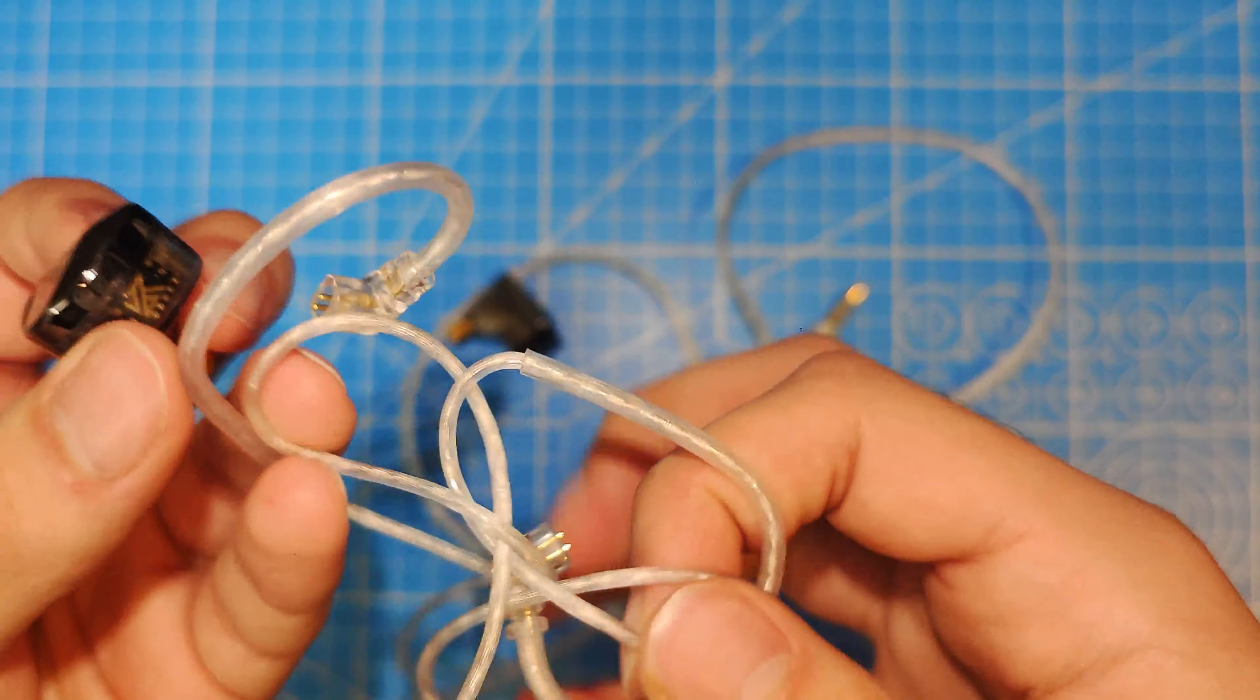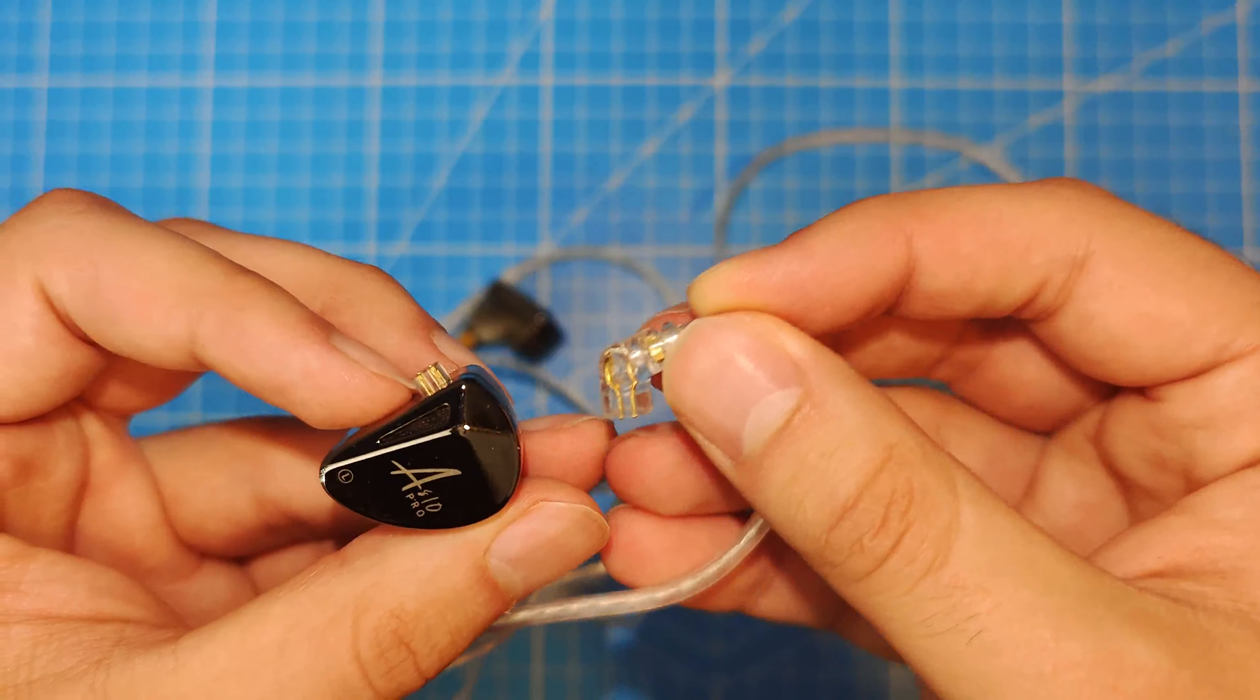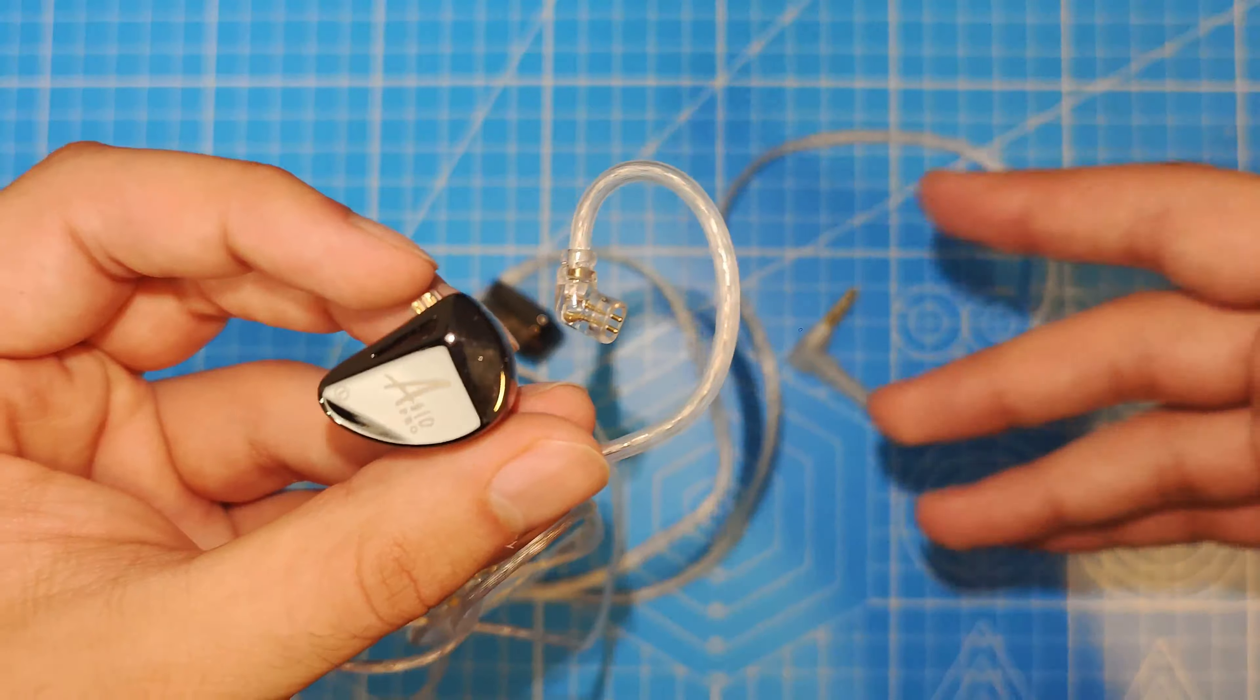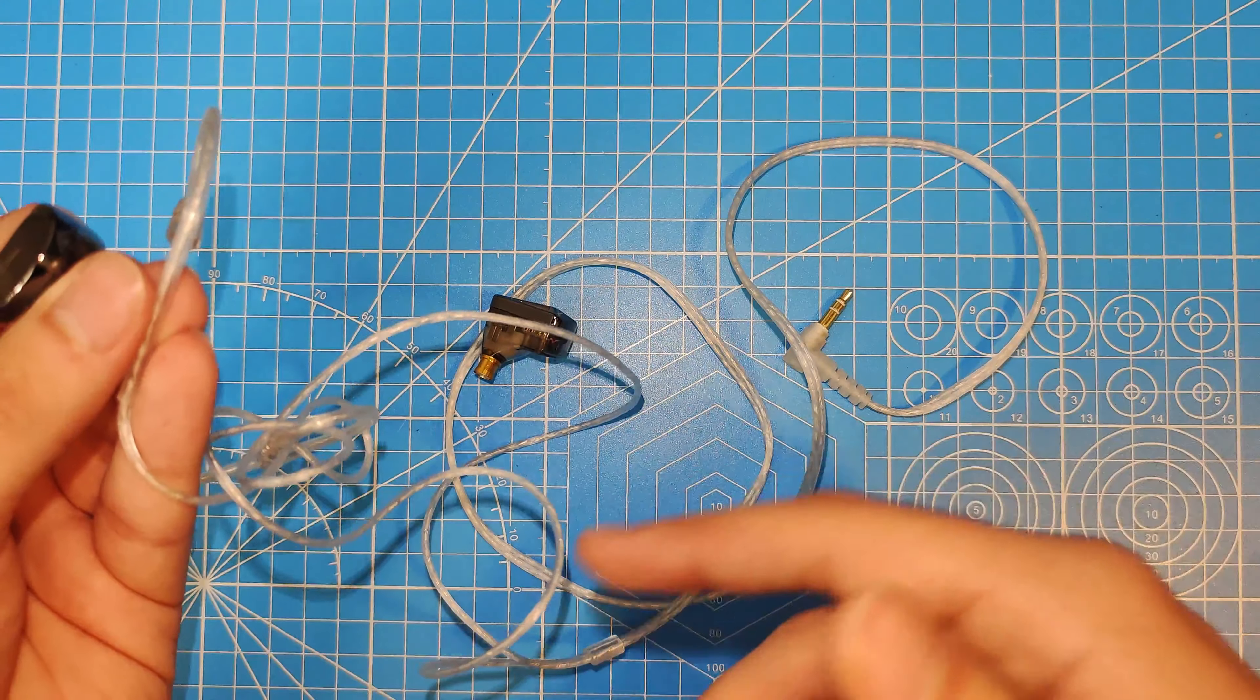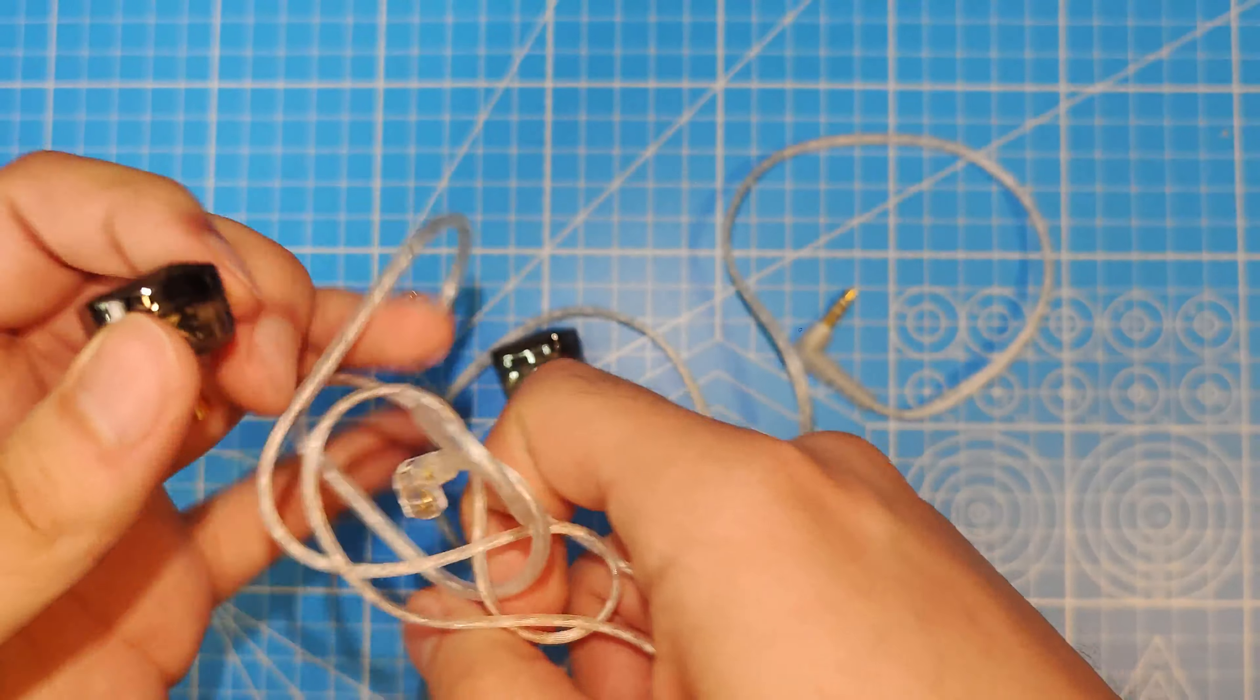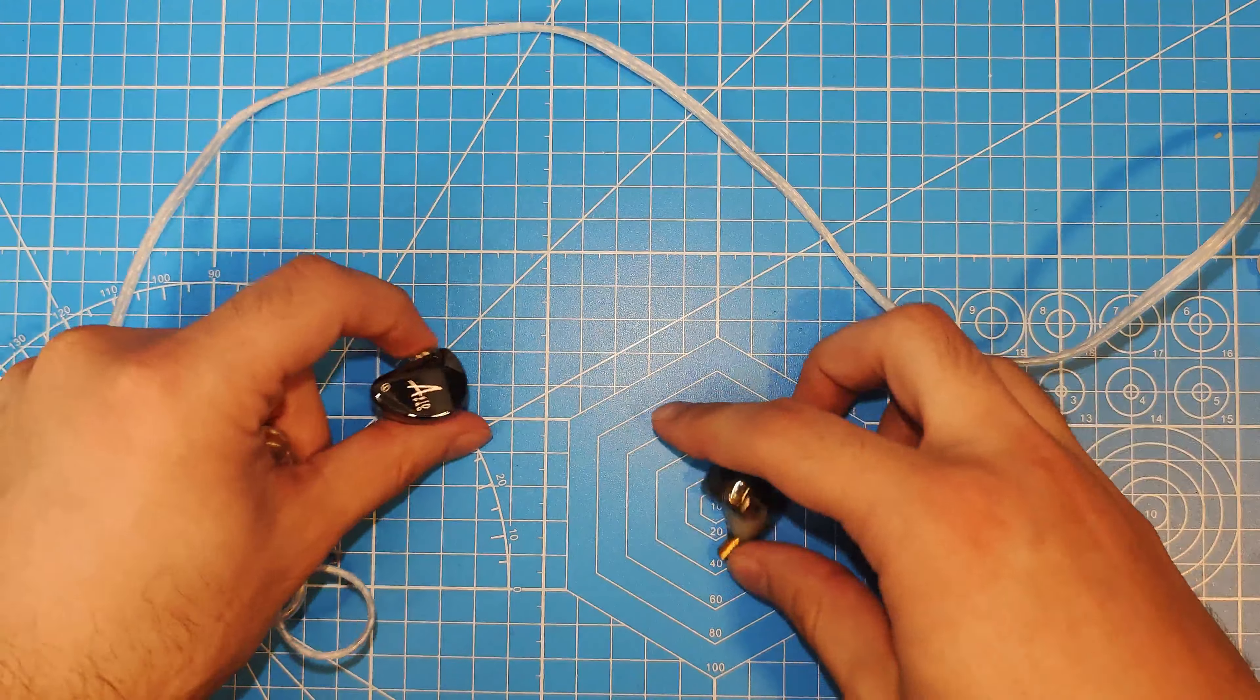But the main reason I say they should have a better cable is because it uses this system that certain IEMs do use. Of course, I've seen it before. But I think that if you're going to have an IEM with a connector that is not 2-pin or MMCX, which are the most common ones, should come with a better cable. Just because it's a bit harder to find one. Or at least it's more unlikely that someone already has a different cable to use instead of the stock one.